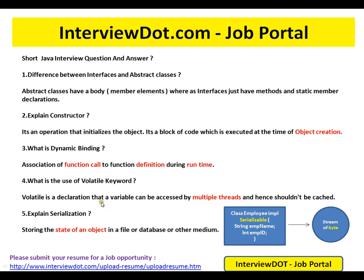What is the use of the volatile keyword? Volatile is a declaration that a variable can be accessed by multiple threads and hence should not be cached — it is a shared variable among multiple threads.